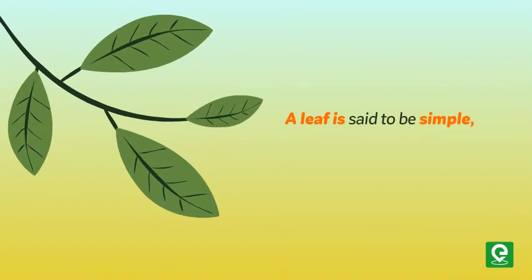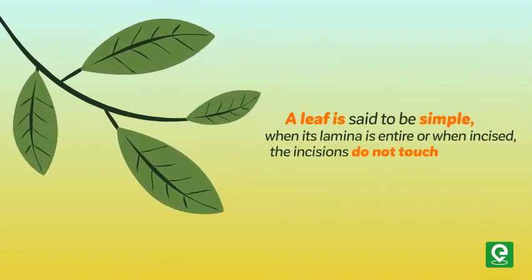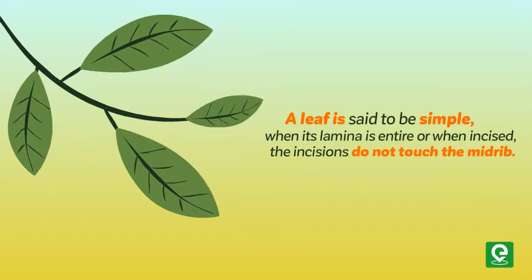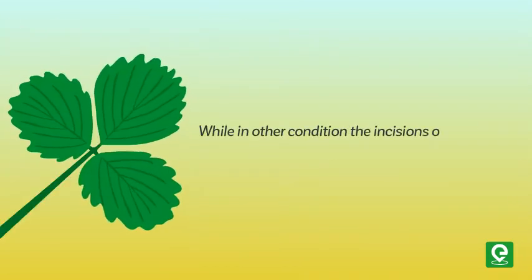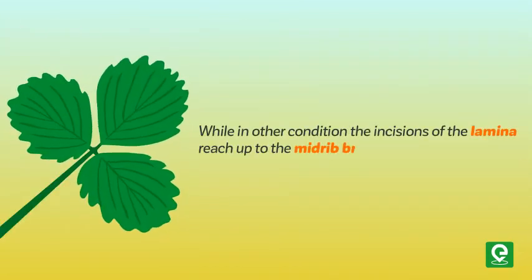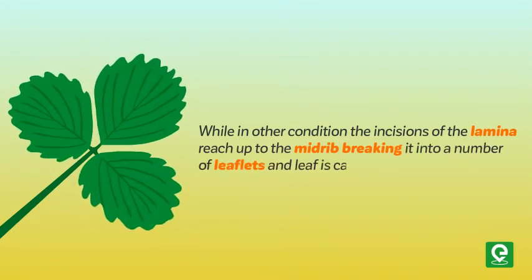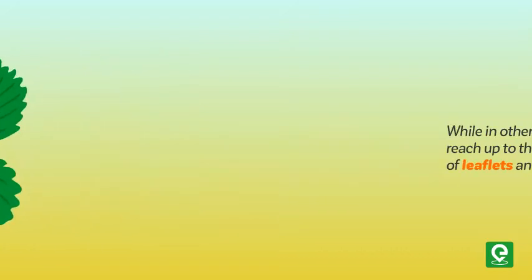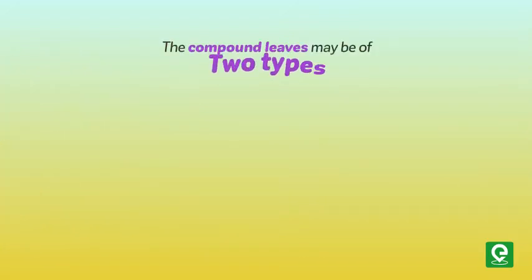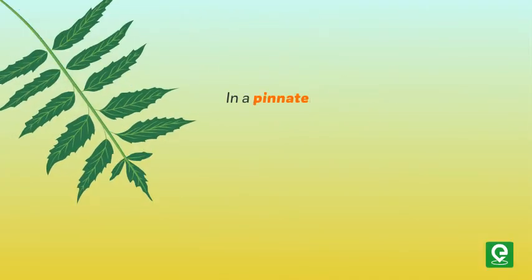There are two types of leaves: simple and compound. A leaf is said to be simple when its lamina is entire, or when incised, the incisions do not touch the midrib. In the other condition, the incisions of the lamina reach up to the midrib, breaking it into a number of leaflets, and the leaf is called compound. Compound leaves may be of two types: pinnately and palmately.